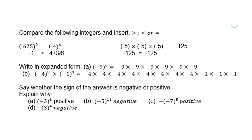In expanded form: negative 9 to the power of 6 will be negative 9 six times. Negative 4 to the power of 8 will be negative 4 eight times. Negative 1 to the power of 3 will be negative 1 three times.